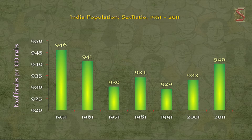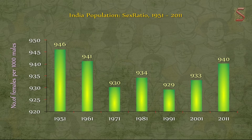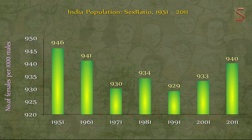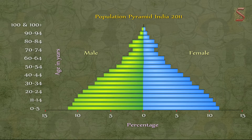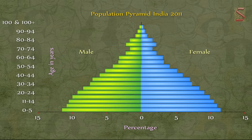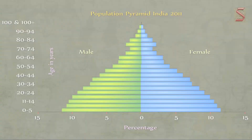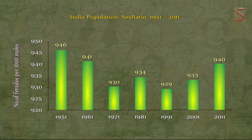The next important outcome of the census is the sex ratio. Sex ratio is the number of females per thousand males in the population of the country. In other words, it shows the male and female population in the country. The sex ratio is an important social indicator which brings out the extent of equality between males and females in a country.